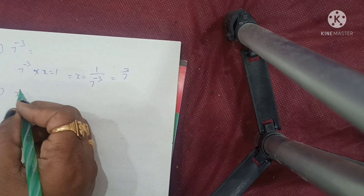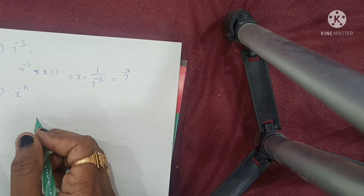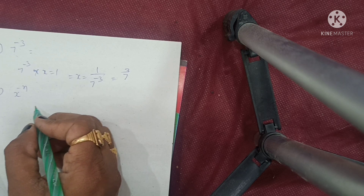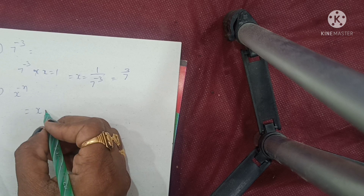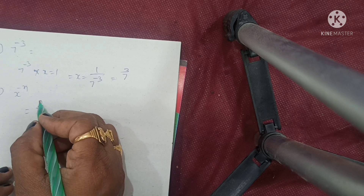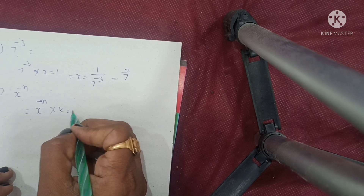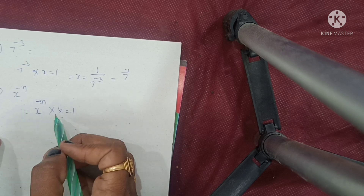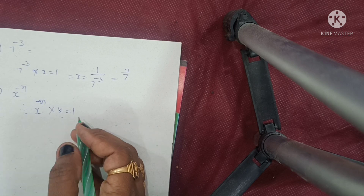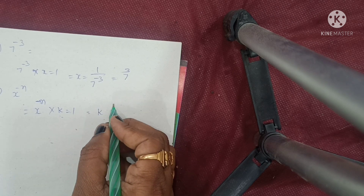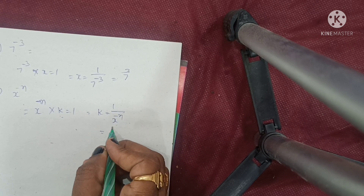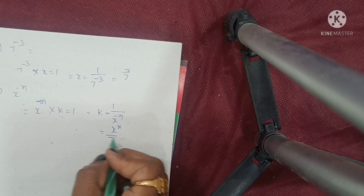Fifth one: x power of minus 7. To avoid confusion with the variable x, I am using k instead. Setting x^(-7) × k = 1, so k = 1 by x power of minus n, that is equal to x power of n. Answer is simple.